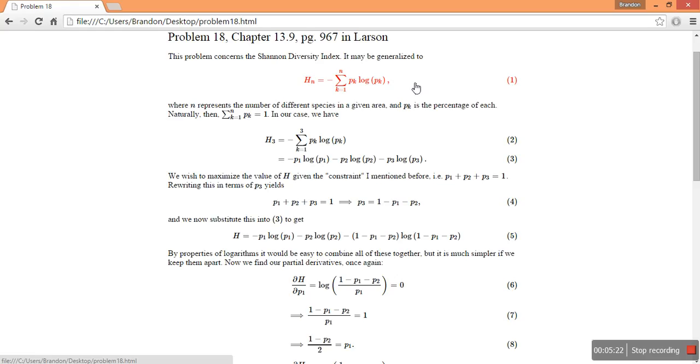And those 45 variables would have to be, those 45 p sub k's would have to be percentages of those species in a given area.